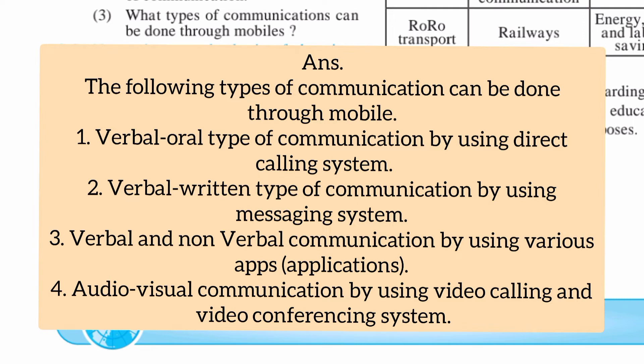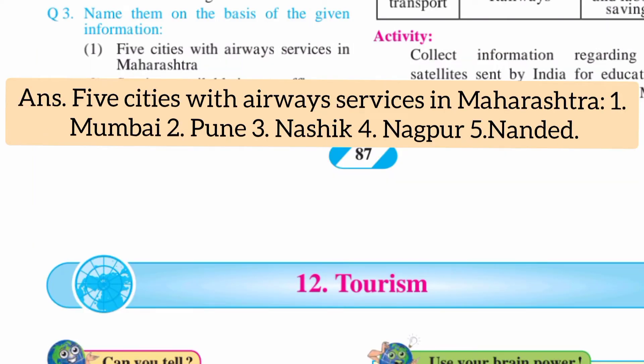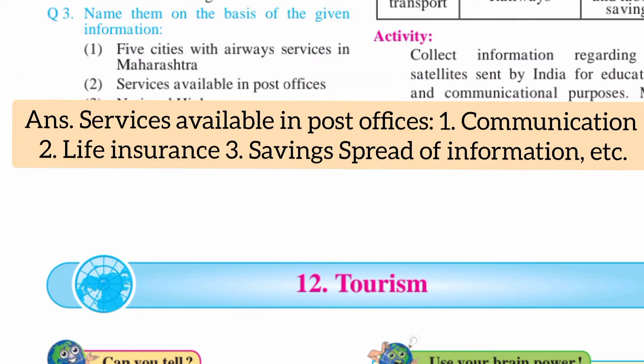Question number three: name them on the basis of the given information. First, name five cities with airway services in Maharashtra. Second, name the services available in post offices.